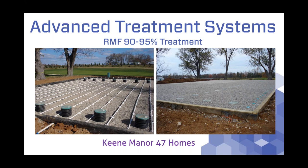With that highly treated effluent from these advanced treatment systems, it gives us a lot more flexibility in how we dispose of it. What you're looking at on the left is a rectangular excavation with gravel in it and distribution piping. This is 47 homes in central Kentucky, just south of Lexington. This site has a golf course on it, which you can see in the background, where we actually installed the final dispersal system — a drip irrigation system.